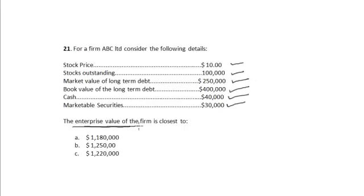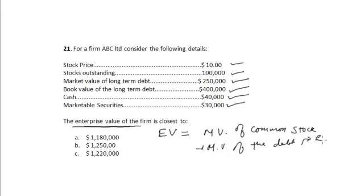Now, the enterprise value of the firm is closest to what? The enterprise value of the firm, EV, is equal to the cost of acquiring the firm. Enterprise value of the firm equals market value of the common stock plus market value of the debt. This debt includes all the long-term as well as short-term debt, minus cash, minus marketable securities or investments.